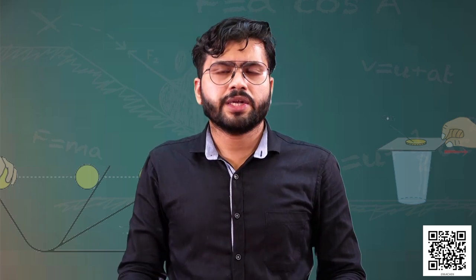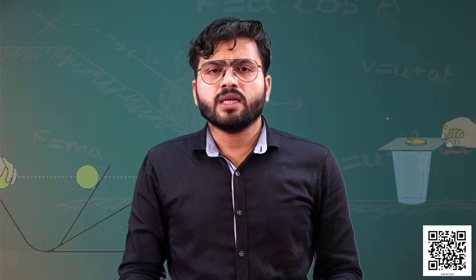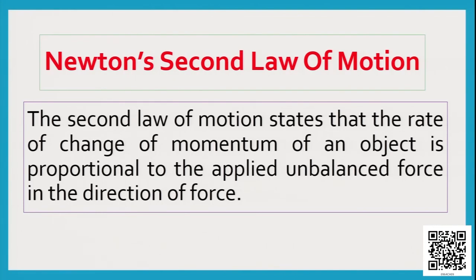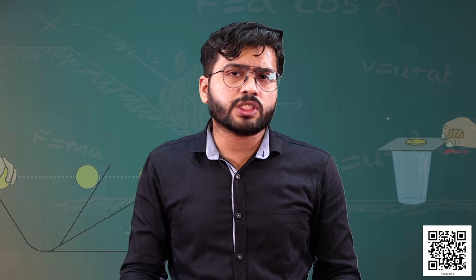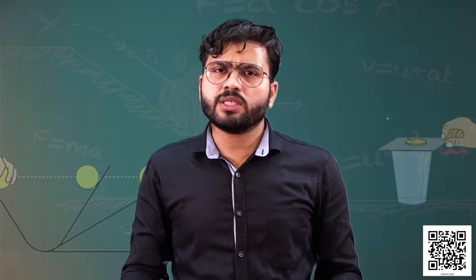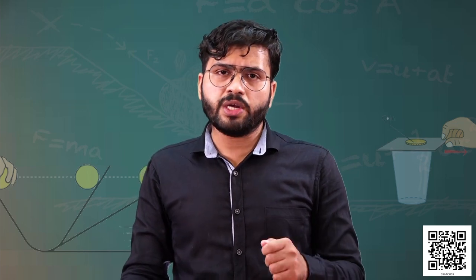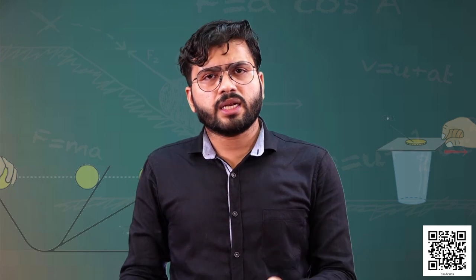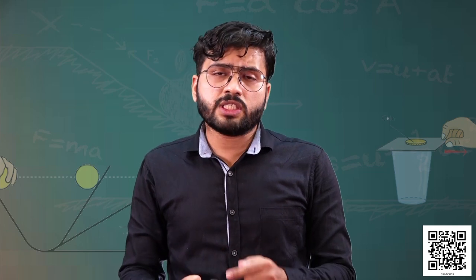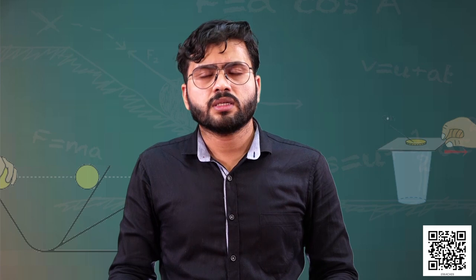This relationship between change in velocity and mass was established by Newton, who proposed the second law of motion. The second law of motion states that the rate of change of momentum of an object is proportional to the applied unbalanced force in the direction of the force. Whenever we apply a force, velocity changes, and that rate of change of momentum gives us the force exerted.